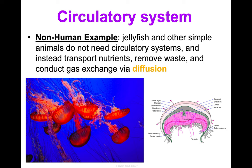The skeletal system is sometimes grouped with the muscular system as the musculoskeletal system since they work together in movement, but the skeletal system also provides support and protects internal organs. Key structures include bones, tendons, ligaments, and cartilage. Non-human examples: insects and crustaceans have exoskeletons on the outside of their bodies; starfish have skeletons made of tubes and fluids rather than bones — so a skeleton doesn't necessarily mean bones.